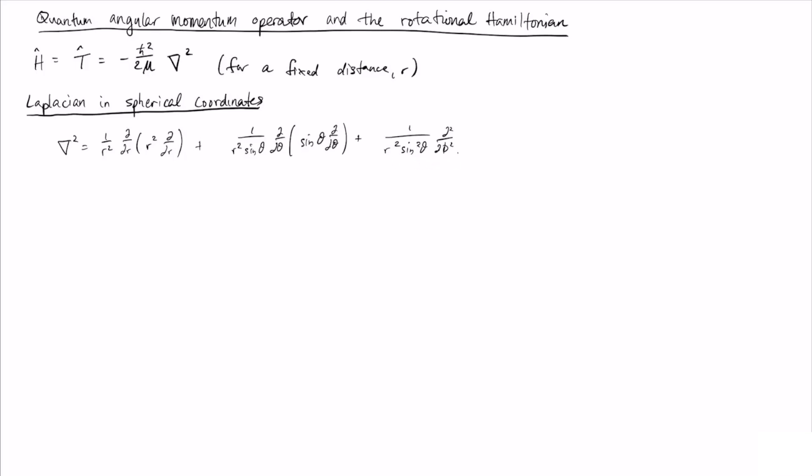We can simplify this a little bit because we're interested in a fixed distance. So anything that has a derivative with respect to distance, we can just forget about right away. This first term we can just ignore. And the next thing we can do is set the actual distance that we're interested in. To be more concrete, we will set r equal to l, the distance between the two atoms that are rotating. And so we're going to rewrite this using r equals l.